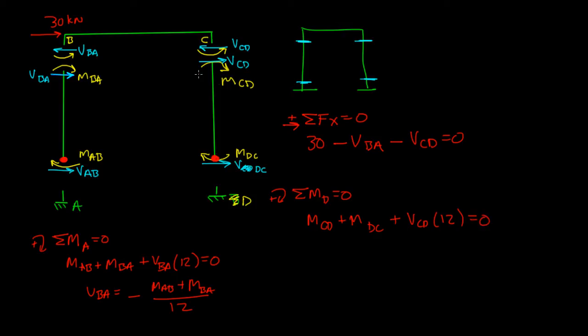So, you have MCD going clockwise here, MDC is positive there, and then you have VCD times 12 is equal to 0. And if I solve for VCD, I get negative MCD plus MDC over 12 is equal to 0.